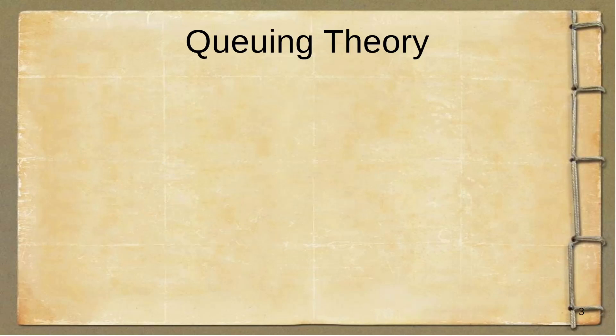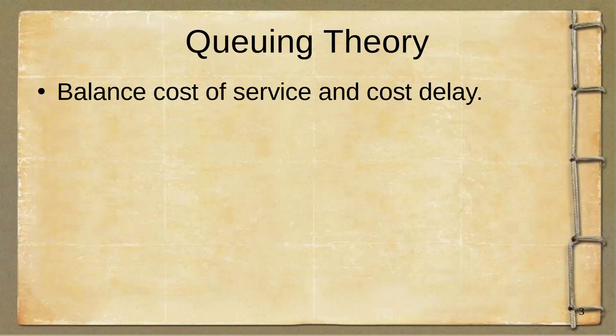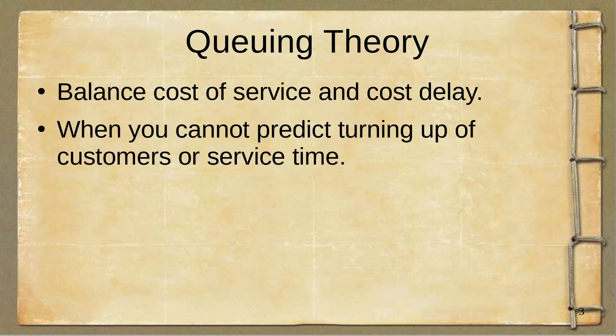Let's see what queuing theory is. Queuing theory is all about balancing the cost of service and the cost of delay. Whenever you give any service to a person, it costs. If there is a delay in giving a service, that costs too because the customer may go to your competitor. When you cannot predict the arrival of customers or the service times, queuing theory helps you achieve a balance between the cost of service and the cost of delay.